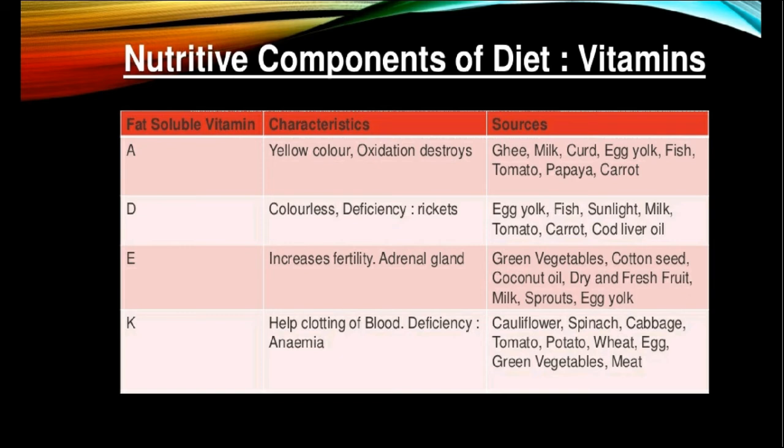The last fat-soluble vitamin is vitamin K. Vitamin K is derived from the word coagulation, which means clotting of blood. This vitamin is helpful in the clotting of blood. Due to its deficiency, blood does not clot easily and generally continues to flow for a longer time in the event of an injury. The requirement of this vitamin is more for pregnant ladies, and its deficiency also causes anemia. The sources of vitamin K are cauliflower, spinach, cabbage, tomato, potato, green vegetables, wheat, egg, meat etc.